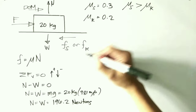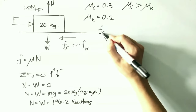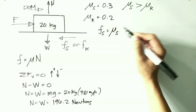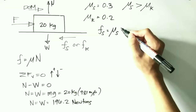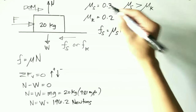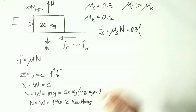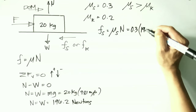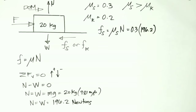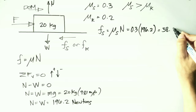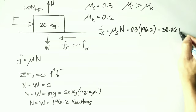Now let's compute for the static friction acting on the system. This would be equal to the coefficient of static friction times the normal force: 0.3 times 196.2, which equals 58.86 newtons.